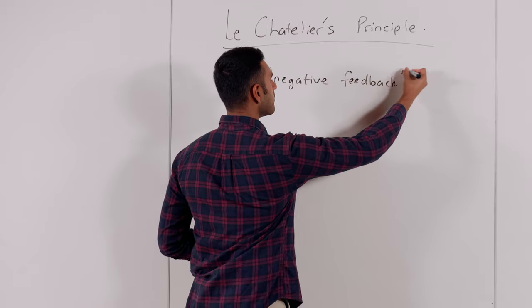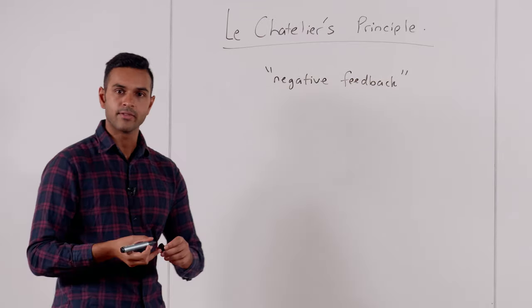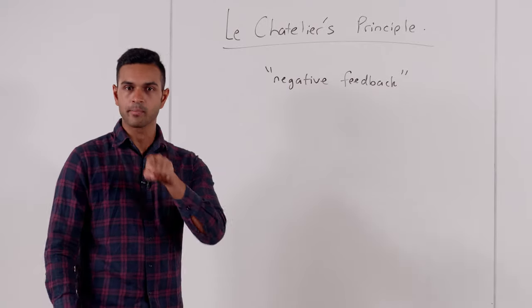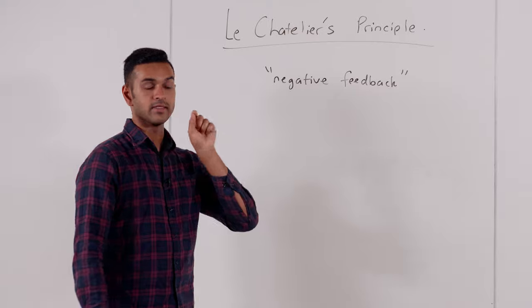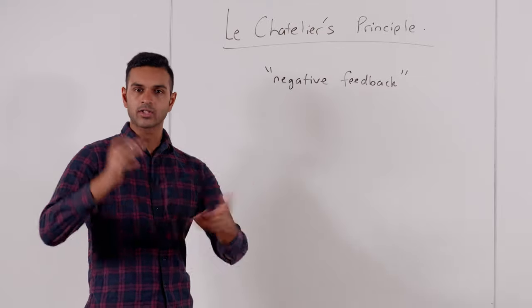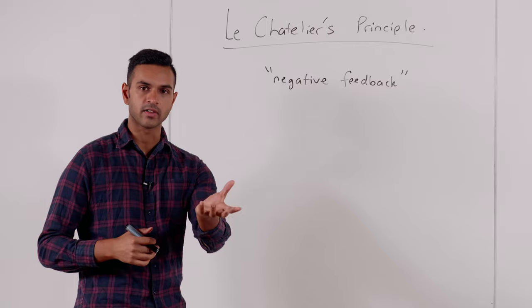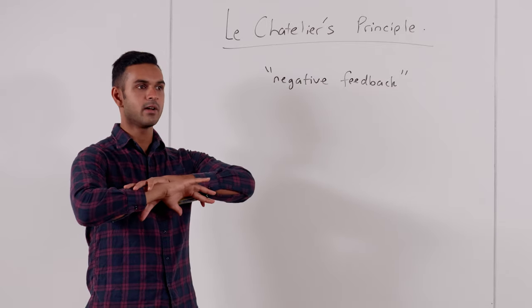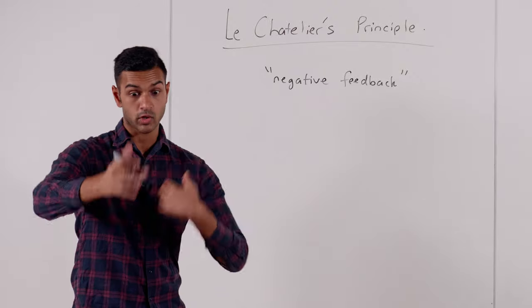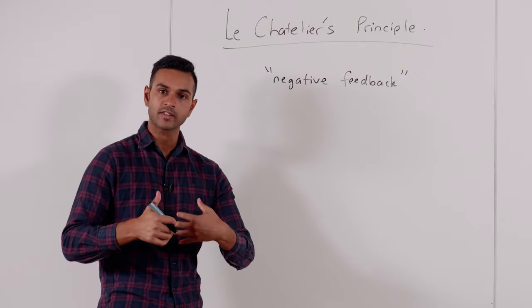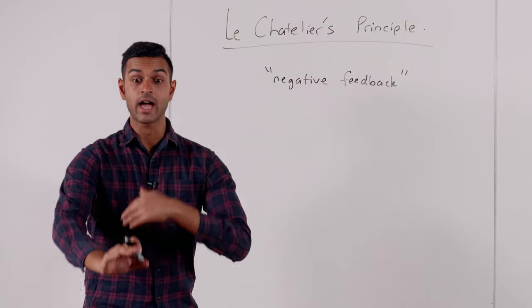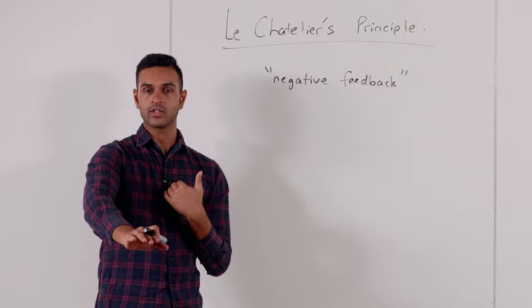Negative feedback is the idea that if you have some sort of system and you disturb it in some way, it's going to counteract what you've done to it. This is something we see everywhere in the world — if you change something, it will sort of try and bring itself back to where it was. It's called negative feedback because you apply a change and it opposes you; it tries to negate your change.